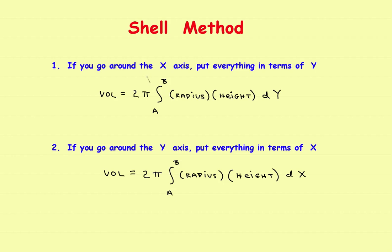This is going to be part three of the shell method. If you haven't done it yet, I would definitely watch the first two, because they show where these equations come from and you'll get to see what the first example looked like. In the first example, we just did one function going around the axis. In this example, we'll have two functions going around both the x and y-axis.